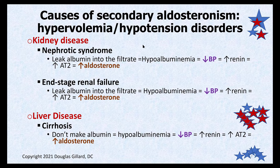Late-stage renal failure is similar: the glomerulus doesn't filter well, you lose albumin, get hypoalbuminemia, and the same mechanism kicks in. Liver disease — cirrhosis — is the same story: the liver is where albumin is made, and as liver cells die you don't make enough albumin. Hypoalbuminemia drops blood pressure; renin is released, converted to angiotensin I, then via ACE to angiotensin II, which stimulates glomerulosa cells to release aldosterone.